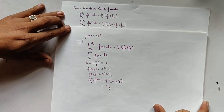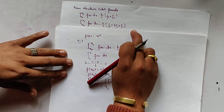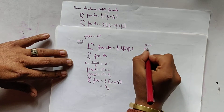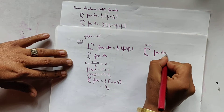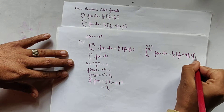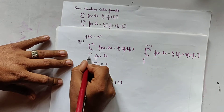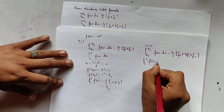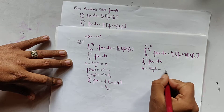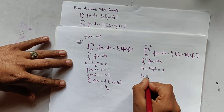Now we use the same function and find its integration using the second Newton-Cotes formula, where n equals 2. The formula is: integral from x₀ to x₂ of f(x) dx = h/3 * (f₀ + 4f₁ + f₂). For 0 to 2, h = (2 - 0)/2 = 1.